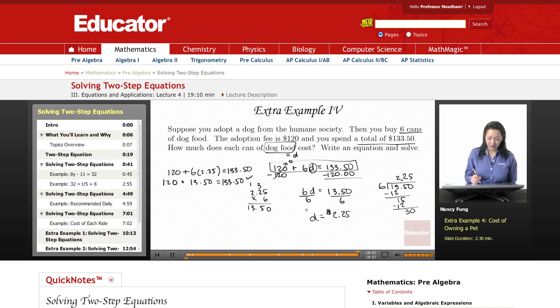So each can of dog food equals $2.25. I've written the equation here and then I've gone ahead and solved it and gotten the price of the can of dog food. Thank you for watching educator.com.